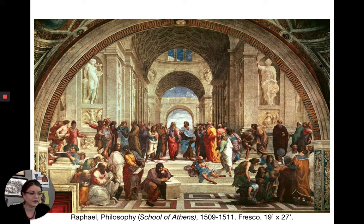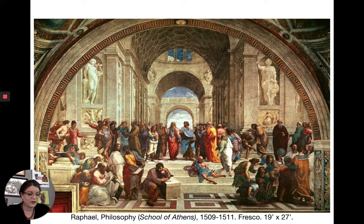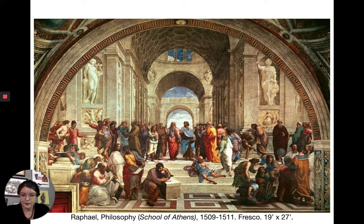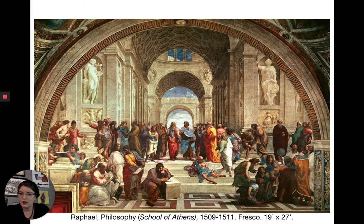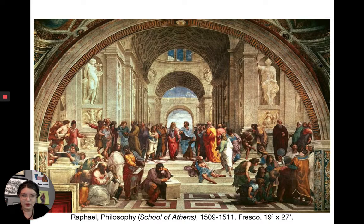The setting of Philosophy is a gathering of all the great minds valued in humanist philosophy — philosophers and scientists (science being a branch of philosophy at this time). These are people from the ancient world, not contemporaries of Raphael or Julius II. The architecture in the painting is clearly Roman — we have a barrel vault with coffered ceilings, a classical Roman technique developed with concrete. We also see statues of Apollo and Athena in the background — deities of arts and wisdom.